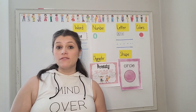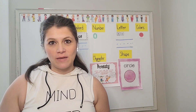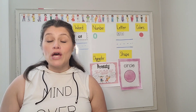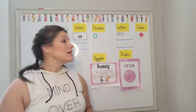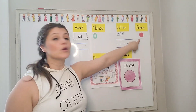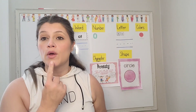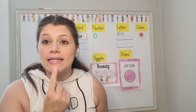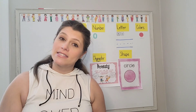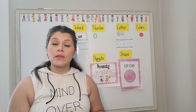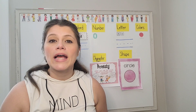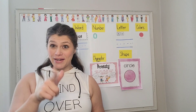So we're going to review all the things we've been talking about in my last few videos, and we're going to put it all together and practice. The first thing we're going to talk about is our color — the color red. Red. Can you practice saying red? Red. Red. Red. Great job.